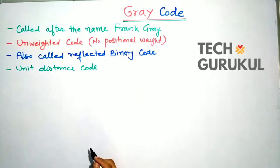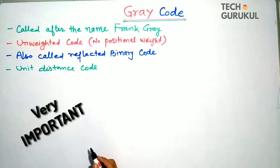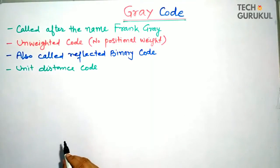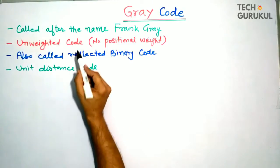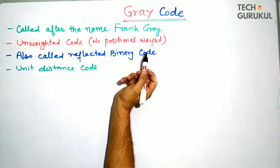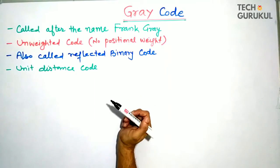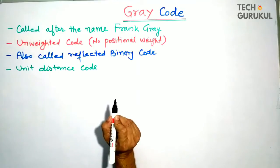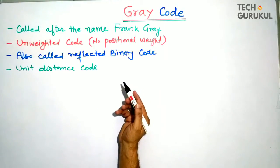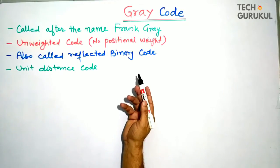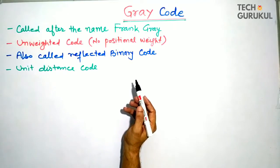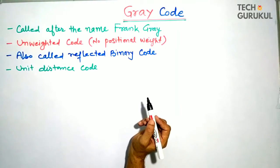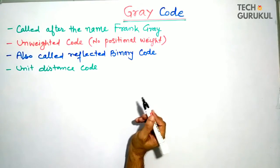In this lecture we will study about Gray codes, a very important topic for exams and interviews. Gray code is named after Frank Gray. It is an unweighted code, meaning no positional weights are assigned. It is also called reflected binary code and is a unit distance code because every two successive codes differ in only one bit. It also reduces switching operations and is called a cyclic code because going from last back to first involves only one bit change.